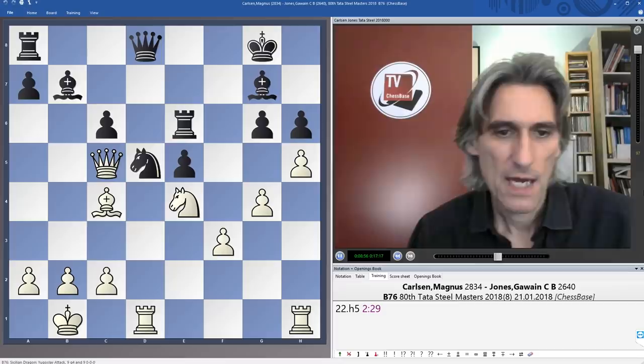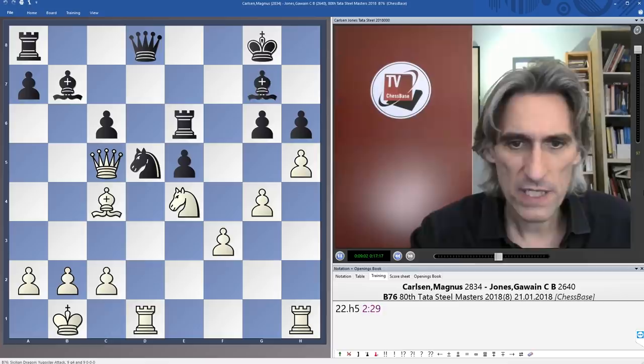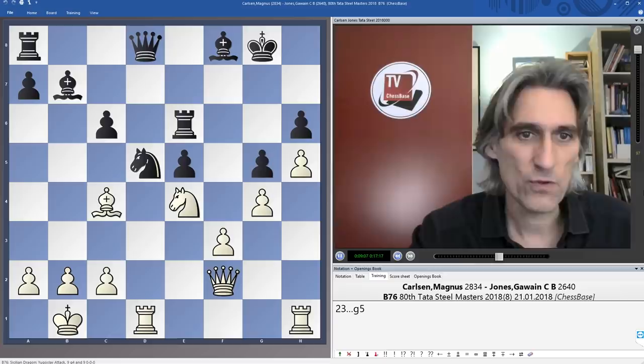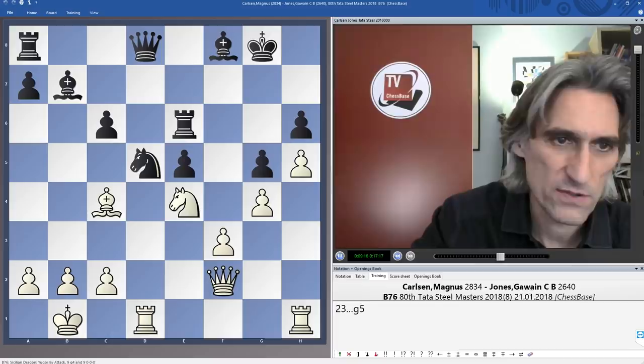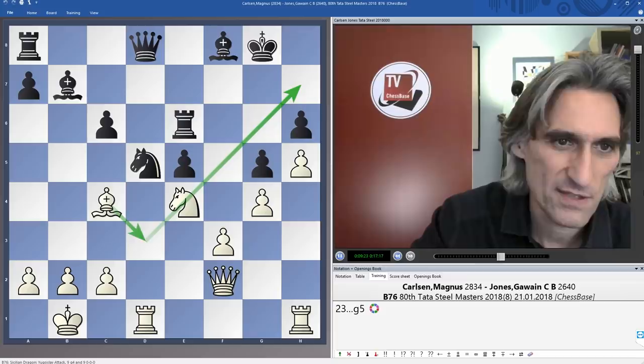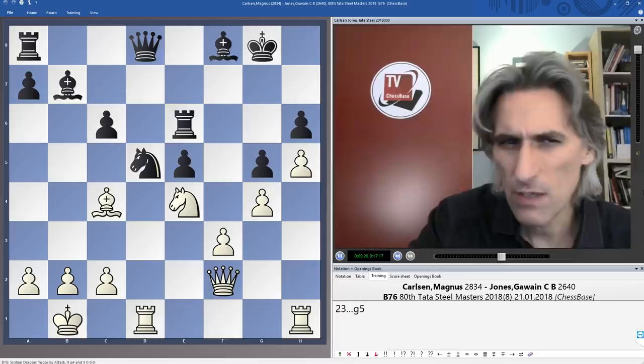h5 from Carlsen. And here, again, bishop f8 looks very natural. Why didn't Gawain play this? Bishop f8, knocking the queen back, and then, of course, close the position on the king's side with g5. Of course, white still has some activity here. Maybe Carlsen can try at some point and bring some pieces onto this diagonal here, but it's certainly not easy.